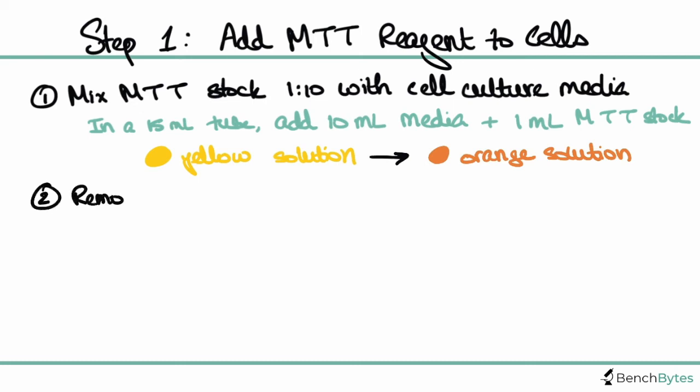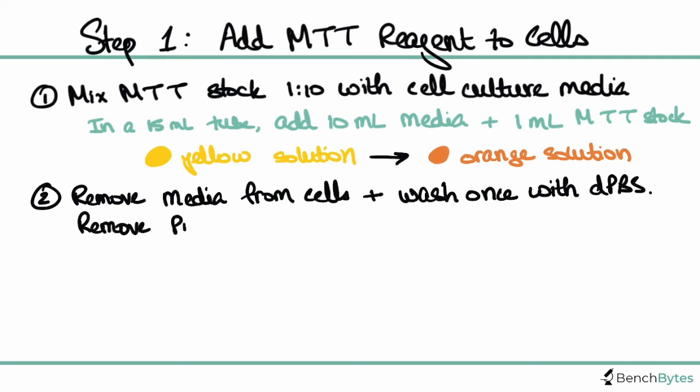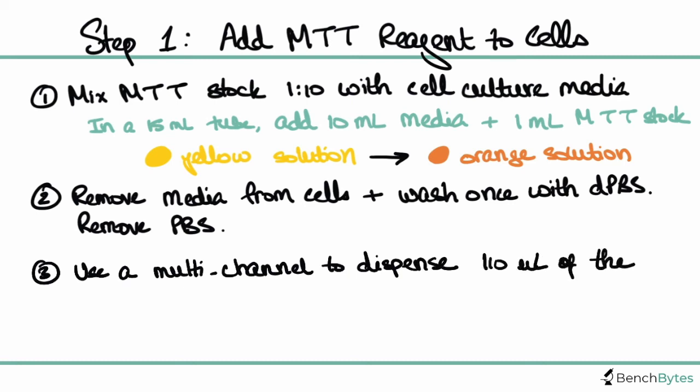You're then going to remove the media from your cells. I like to do this with a pipette up and down just one time to remove any debris that is already on the cells. You can also wash once with PBS and this helps really get rid of any debris or dead cells. You're going to completely remove your PBS from your cells. Then use a multi-channel pipette and a reservoir again because you want to dispense this solution evenly. Add 110 microliters of the MTT plus media solution that you just made into your cells. This is the orange solution, and you want to make sure to dispense it very evenly across your cells.